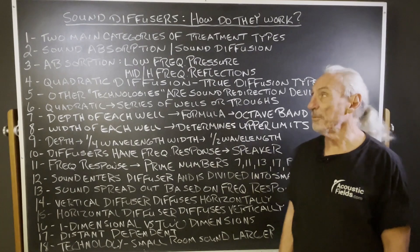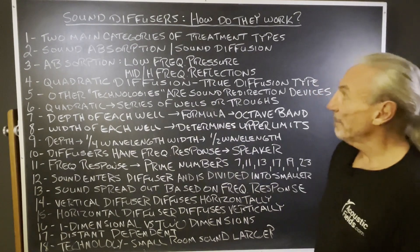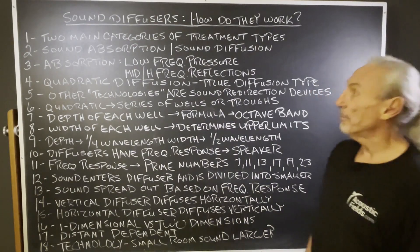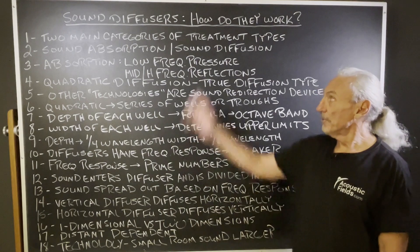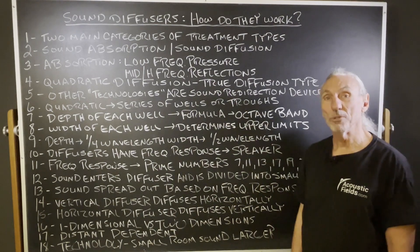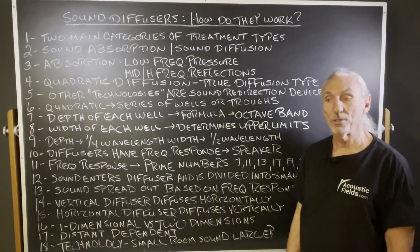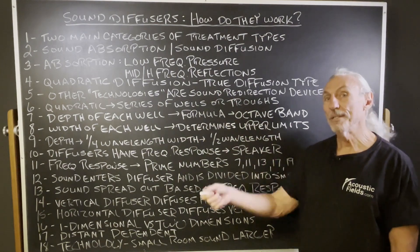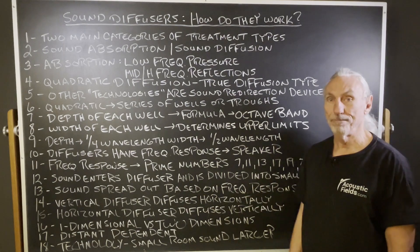Hi everyone, Dennis Foley from Acoustic Fields. Today we're going to talk about sound diffusers — how do they work? There are two main categories of treatment that we use in small room acoustics: sound absorption treatment and sound diffusion.